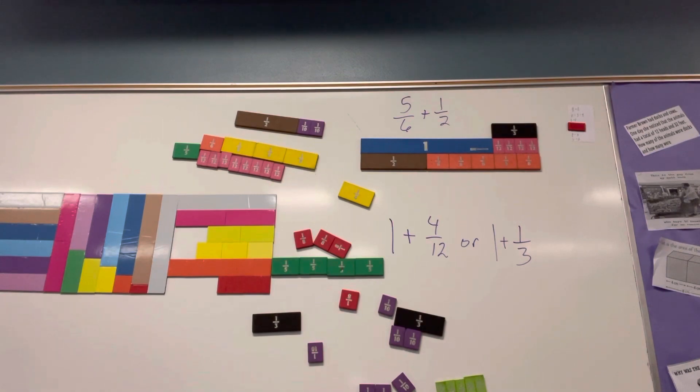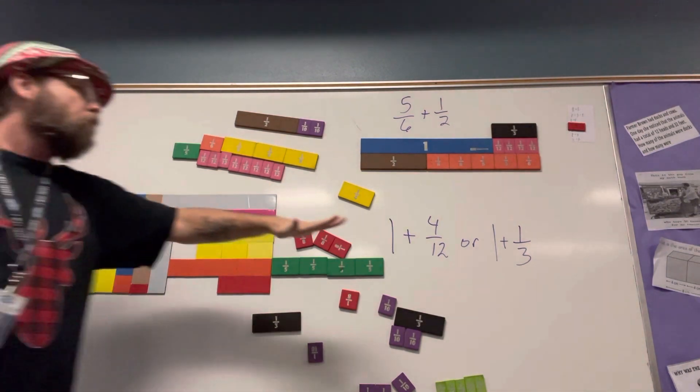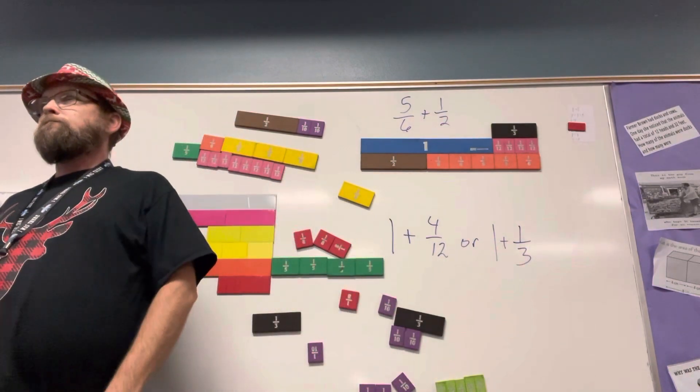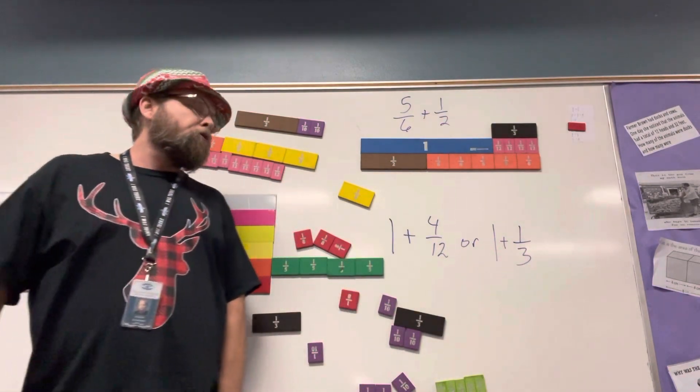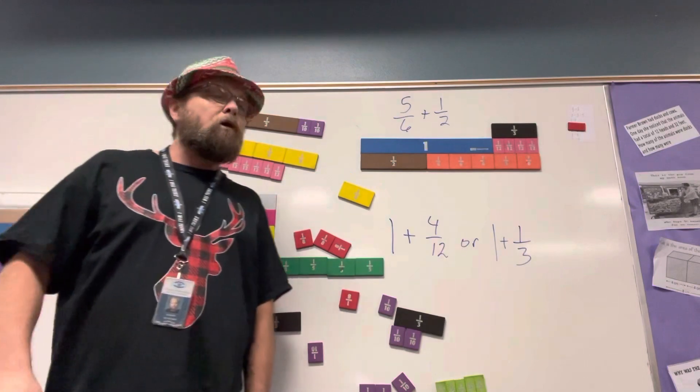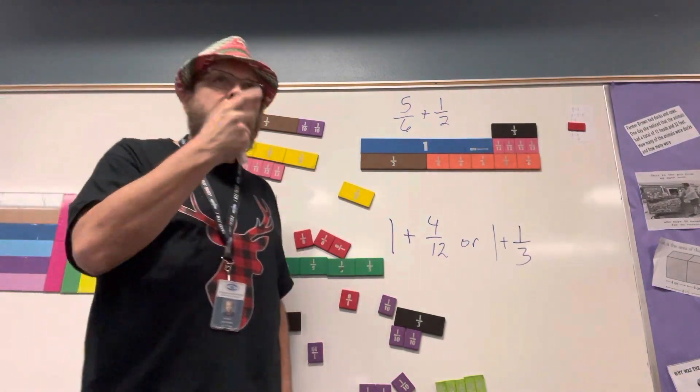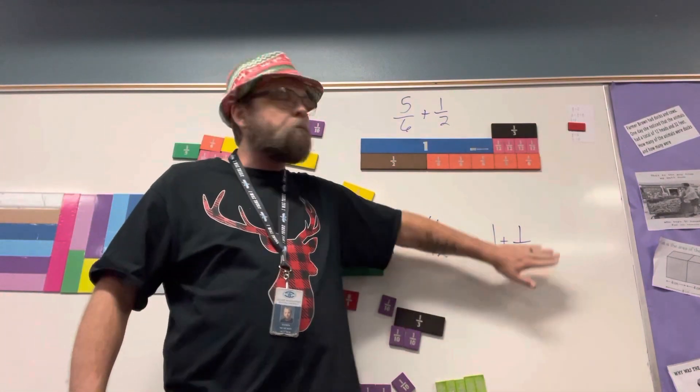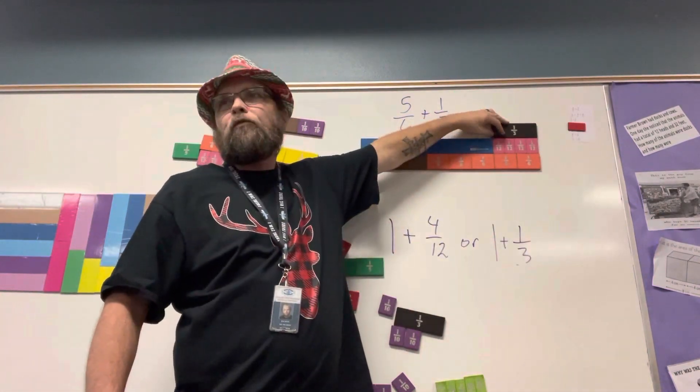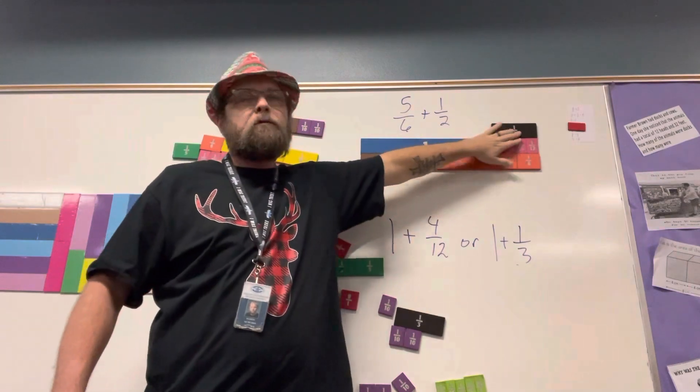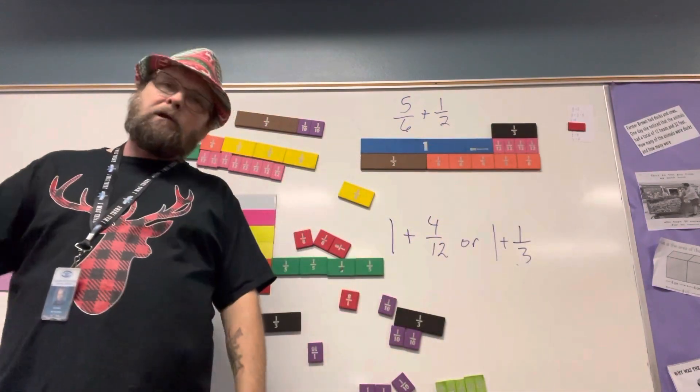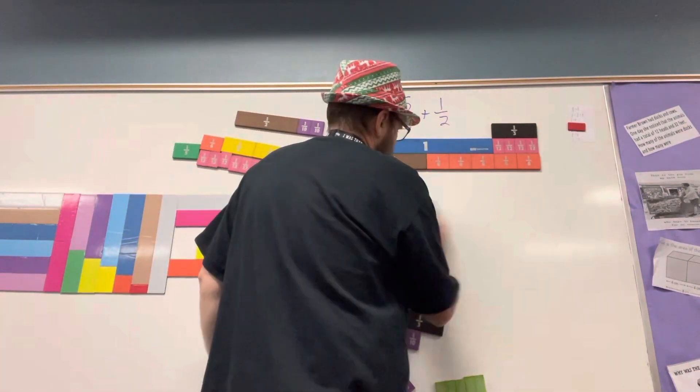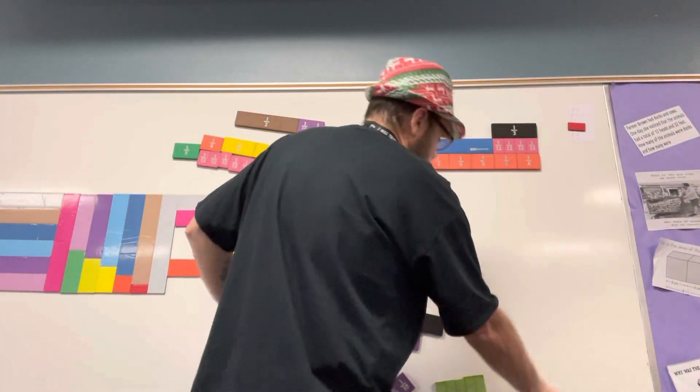Both of those would not be there. Which one would be there? One plus four twelfths or one plus one third? One plus one third. Good, because you always want the fewest number of pieces, right? So one third is fewer than four twelfths.